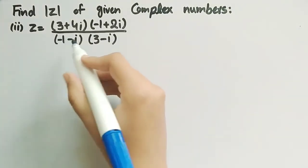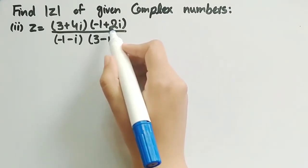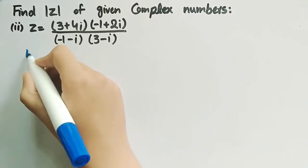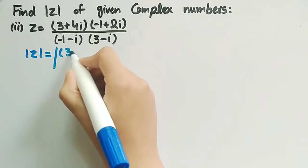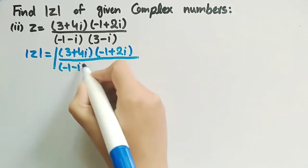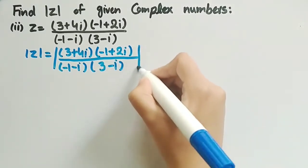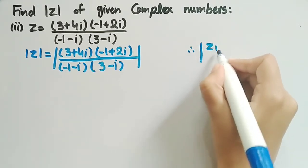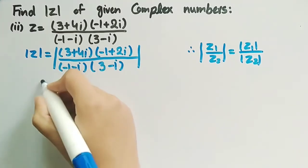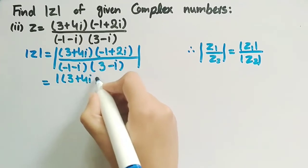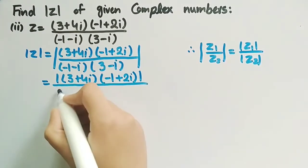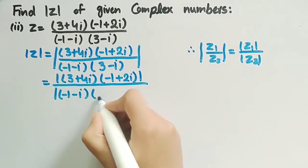Now we will find the modulus of z equal to 3 plus 4 iota, times minus 1 plus 2 iota, divided by minus 1 minus iota, times 3 minus iota. From the properties of complex numbers, we know that mod of z1 divided by z2 equals mod of z1 divided by mod of z2. So we can rewrite it as mod of 3 plus 4 iota times minus 1 plus 2 iota, divided by mod of minus 1 minus iota times 3 minus iota.